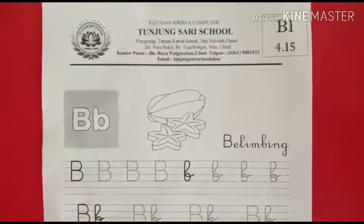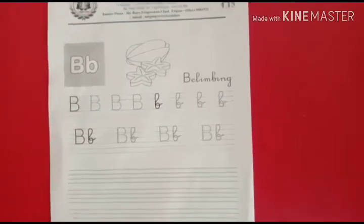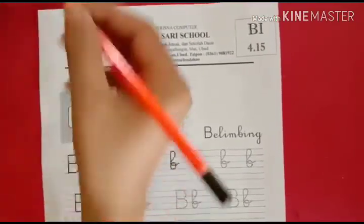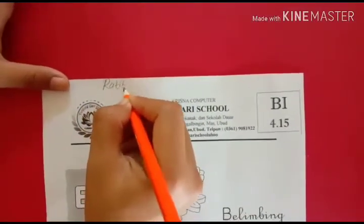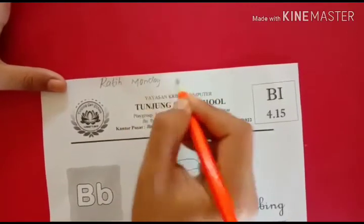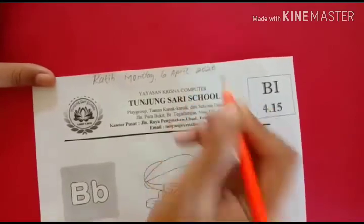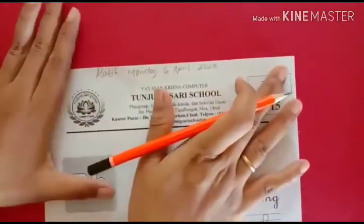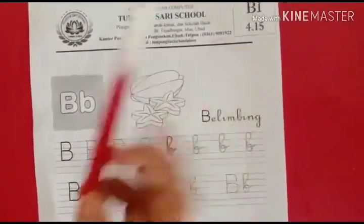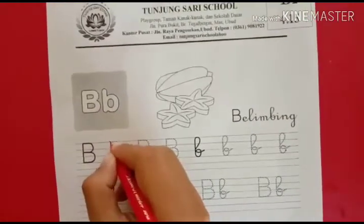Well students, after you have finished making letter A, now let's continue to letter B. Yes, as usual we have to write down your name, the day, the date, month, and year 2020. After you make this one, let's do the same thing with tracing — do it slowly so your writing is neat.